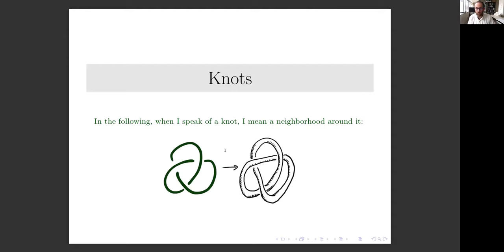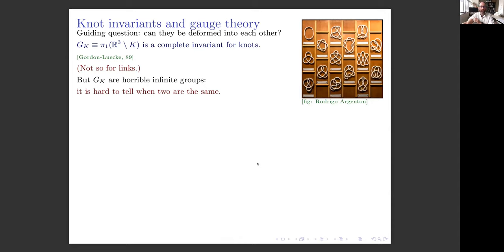The last thing I want to talk about is knots. When I talk about a knot, I mean a neighborhood of the knot—just imagine thickening it a little bit. There's a long history of knot theory, and the basic question is: given two knots, can they be deformed into each other? A complete answer is the fundamental group of the knot complement.